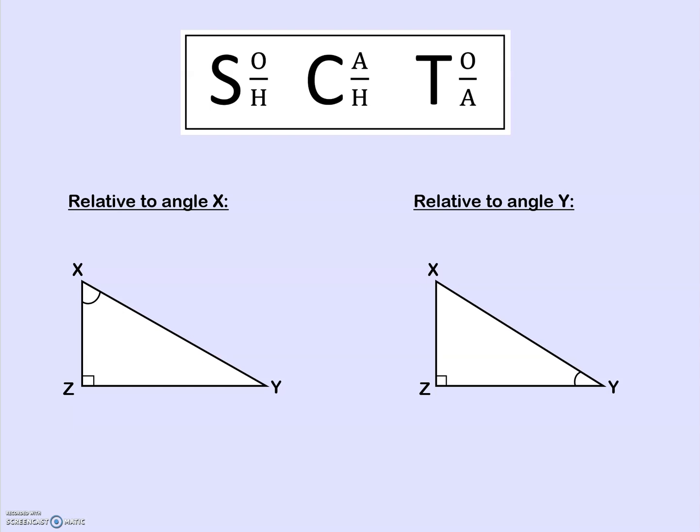Hi, everyone. I just wanted to summarize the introductory lesson to trigonometry with right triangles. There are a bunch of vocabulary words that it's really important you get comfortable with — specifically sine, cosine, and tangent. Those are the trigonometric functions. Sine is opposite over hypotenuse, cosine is adjacent over hypotenuse, and tangent is opposite over adjacent.